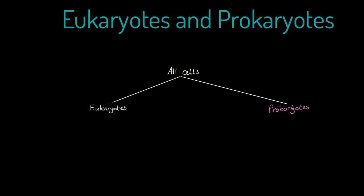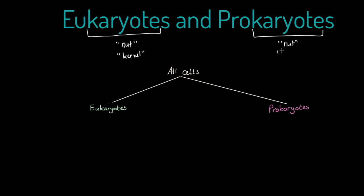When you look at those words it doesn't immediately spring to mind what they mean, so let's try to decipher them. A 'karyot' is what we could call a nut or kernel. 'Eu' as a prefix means true, so a eukaryote is a 'true nut,' whereas 'pro' means before, so prokaryotes are 'before the nut.'